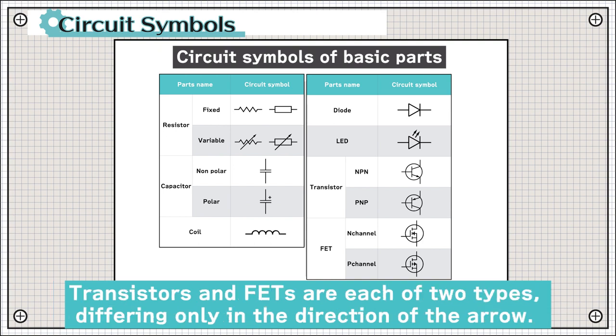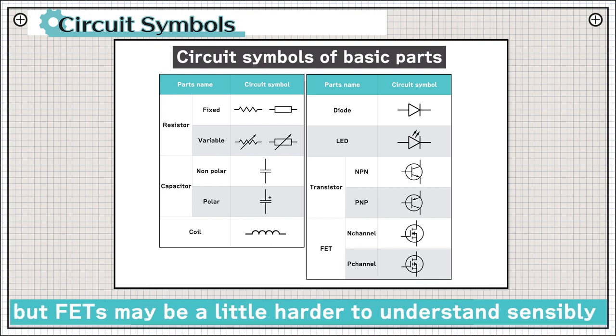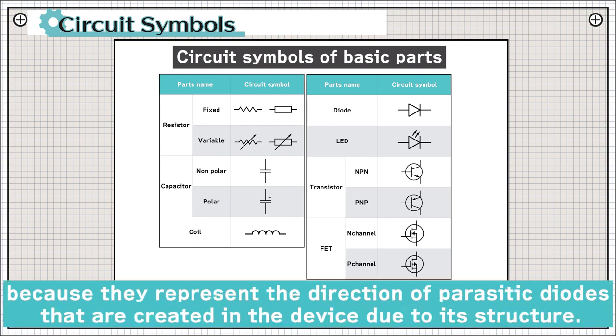Transistors and FETs are each of two types, differing only in the direction of the arrow. Transistors are easy to remember because the direction of the current flow matches the direction of the arrow, but FETs may be a little hard to understand sensibly because they represent the direction of parasitic diodes that are created in the device due to its structure.